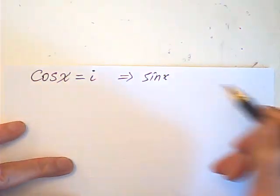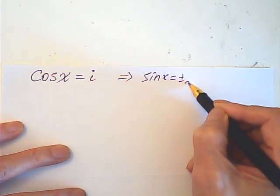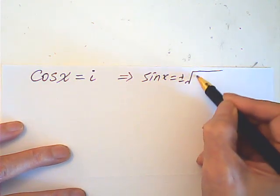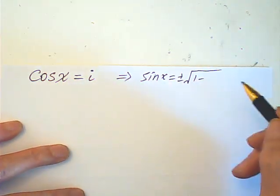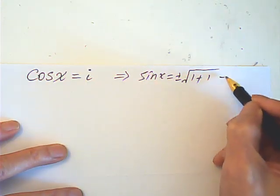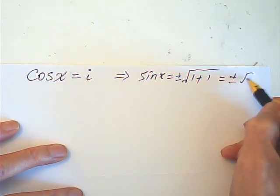Sine x is equal to plus or minus the square root of 1 minus cosine squared, which equals 1. So, this is plus or minus root 2.